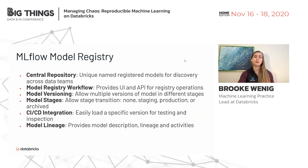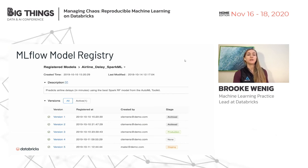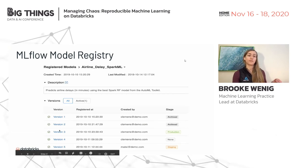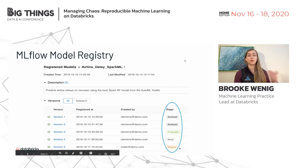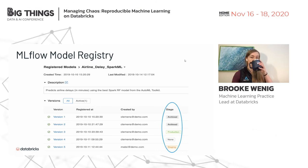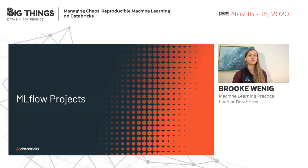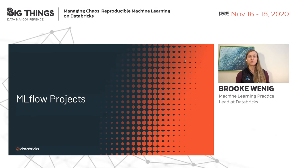The Model Registry is a central repository to search and discover models across all different teams. You can have different versions of a registered model created by various people and see the various stages — for example, two versions archived, one in production, and version 5 in staging but not yet ready for production. Now let's talk about how to package up your code to run on other platforms using MLflow Projects.